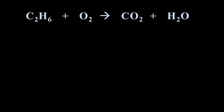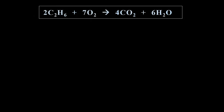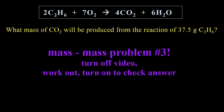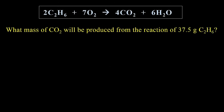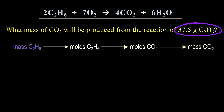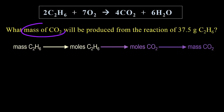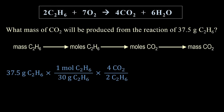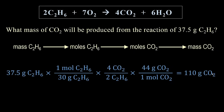Let's do one more mass-to-mass practice using the combustion of ethane, C2H6. First we'll add coefficients to balance. What mass of carbon dioxide will be produced from the reaction of 37.5 grams of C2H6? Try to work it out yourself before continuing. If you have trouble getting started, first make a map and then follow the map: start with what's given, convert to moles, then the mole-mole conversion, then convert to mass of carbon dioxide. The reaction of 37.5 grams of C2H6 produces 110 grams of carbon dioxide.